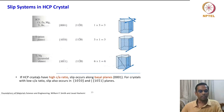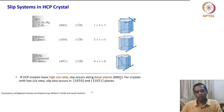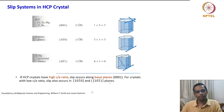For HCP crystals with a low c/a ratio, slip also occurs on prism planes. This is one thing we have to remember.